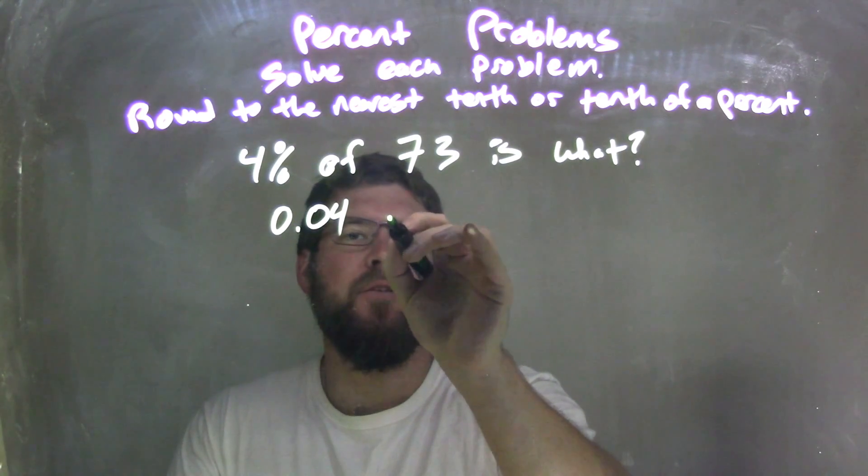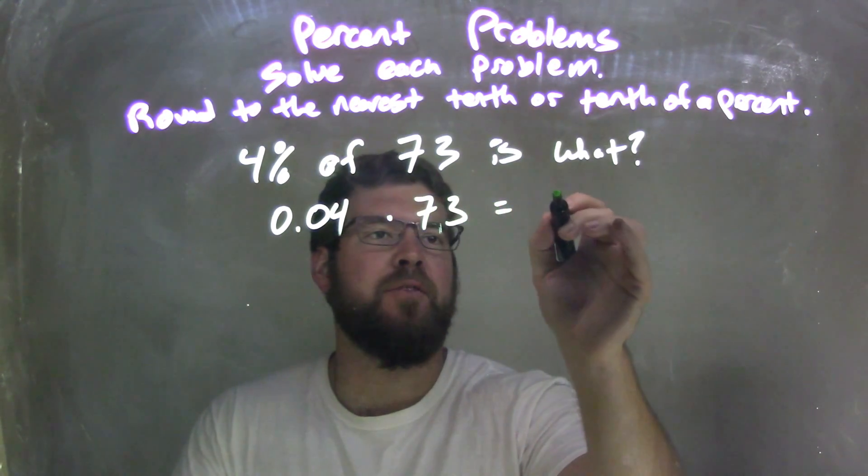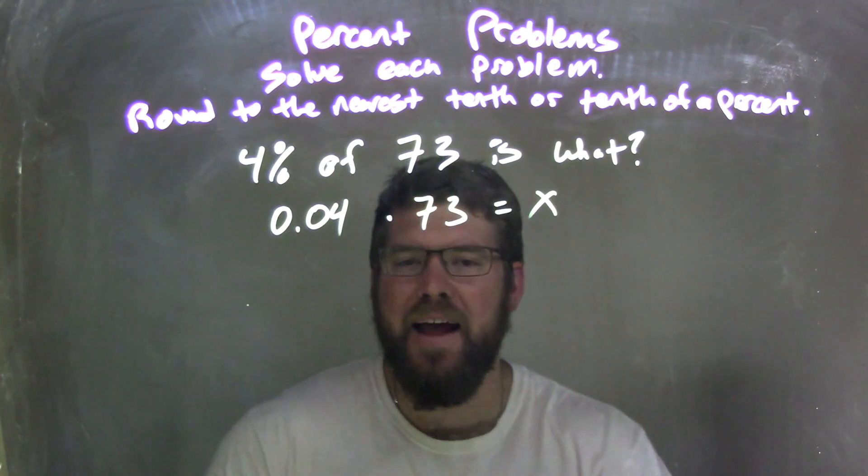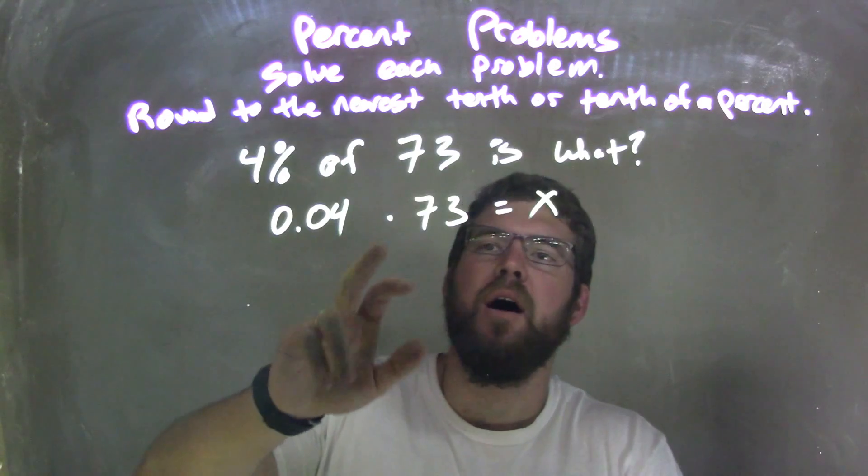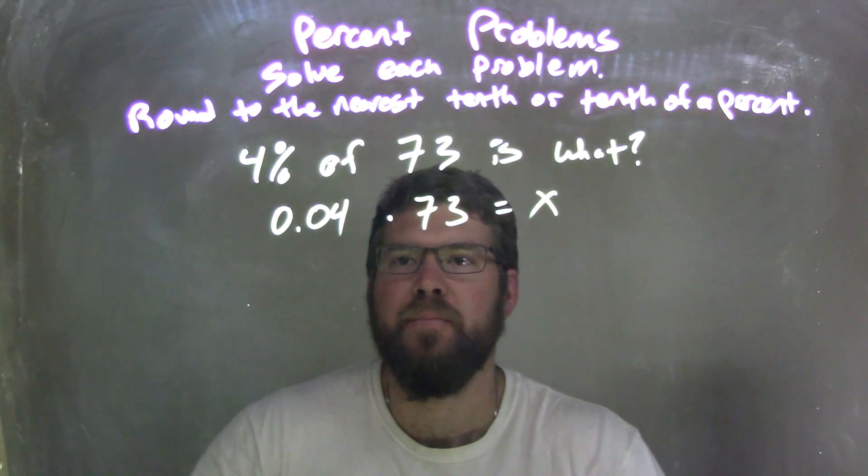So 4% of 73 times 73 is what? That's what we want to find, that x, right? So 4% or 0.04, converted in our first step here. 73 is what? x.